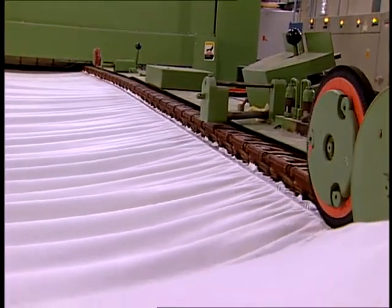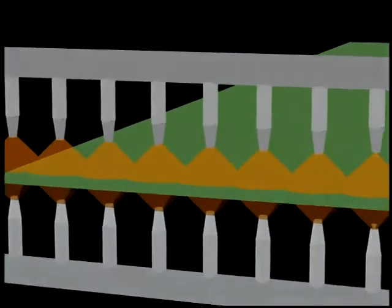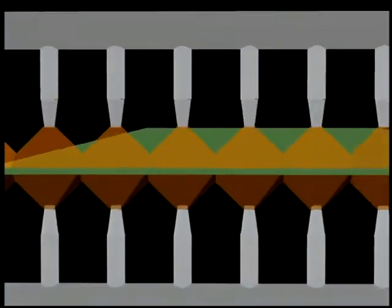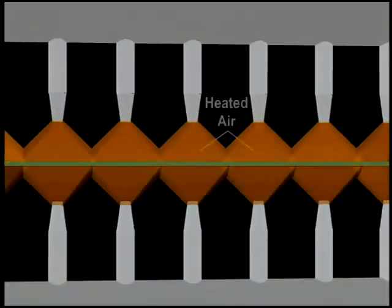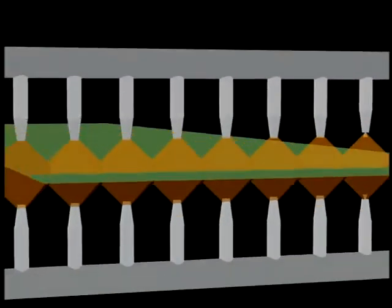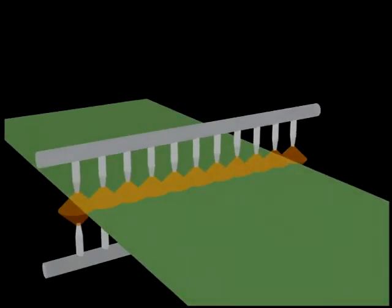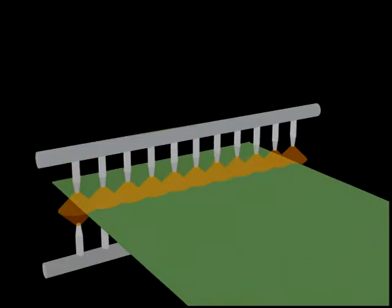As the fabric dries, it shrinks. Inside the frame, a high velocity of air is blown through nozzles placed above and below the fabric. As the fabric is transported through the frame, the mechanical action of blown air causes it to dry and shrink. In essence, the fabric moves through on a cushion of air.